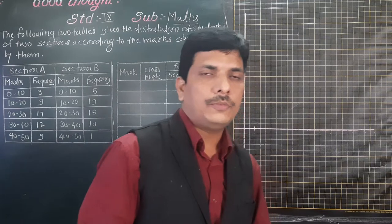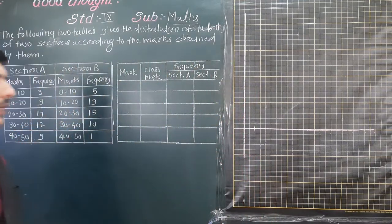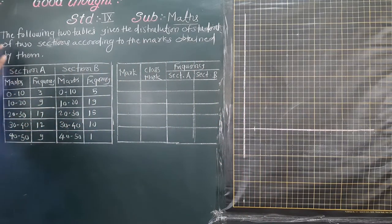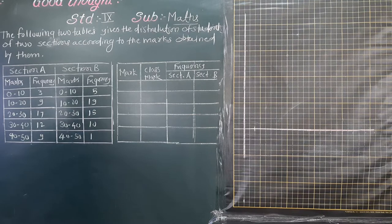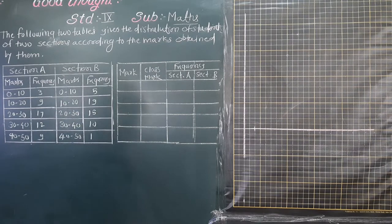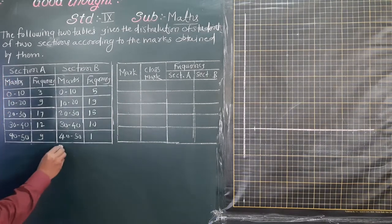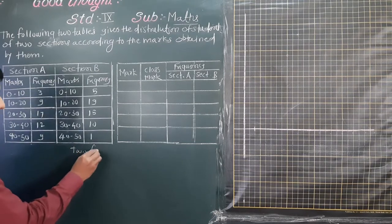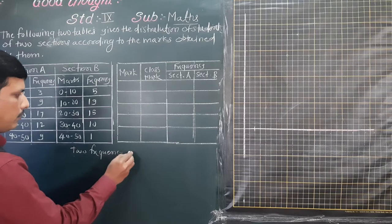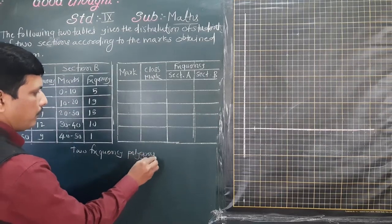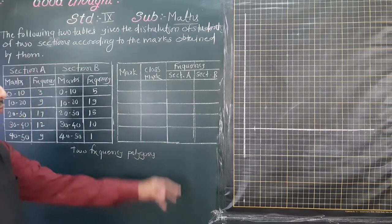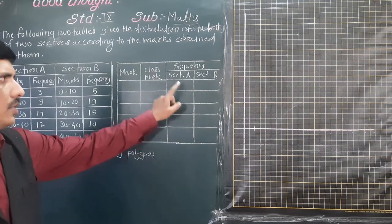Now here is our next problem, taken from the NCERT textbook. The problem says: the following two tables give the distribution of students of two sections according to the marks obtained. We have to represent the marks of students of both sections on the same graph using two frequency polygons.